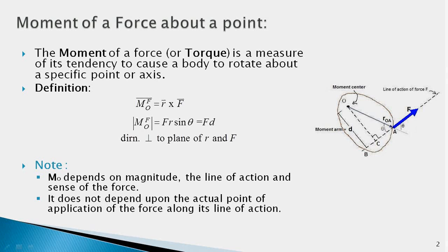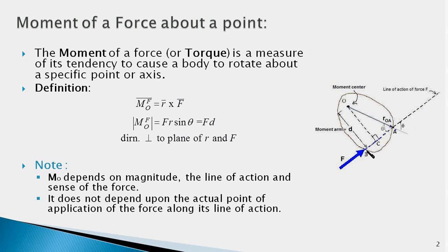The second important point is that the moment does not depend upon the actual point of application of the force along its line of action. The moment of a force with point of application at point A is the same as the moment with point of application at point B, as shown in the figure — and the same is true for any other point along the line of action. This is because the perpendicular distance from point O to the line of action remains the same, so the moment about O and the rotational effect remain unchanged.